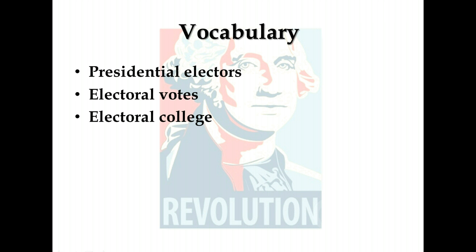In formal terms, the President is chosen according to the provisions of the Constitution. In practice, however, the President is elected through an altogether extraordinary process that is not very well understood by most Americans. That process is a combination of constitutional provisions, state and federal laws, and in the largest measure, a number of practices born of the nation's political parties. To make sense of this very complex system, you must first understand what the Framers had in mind when they designed the Presidential election process.